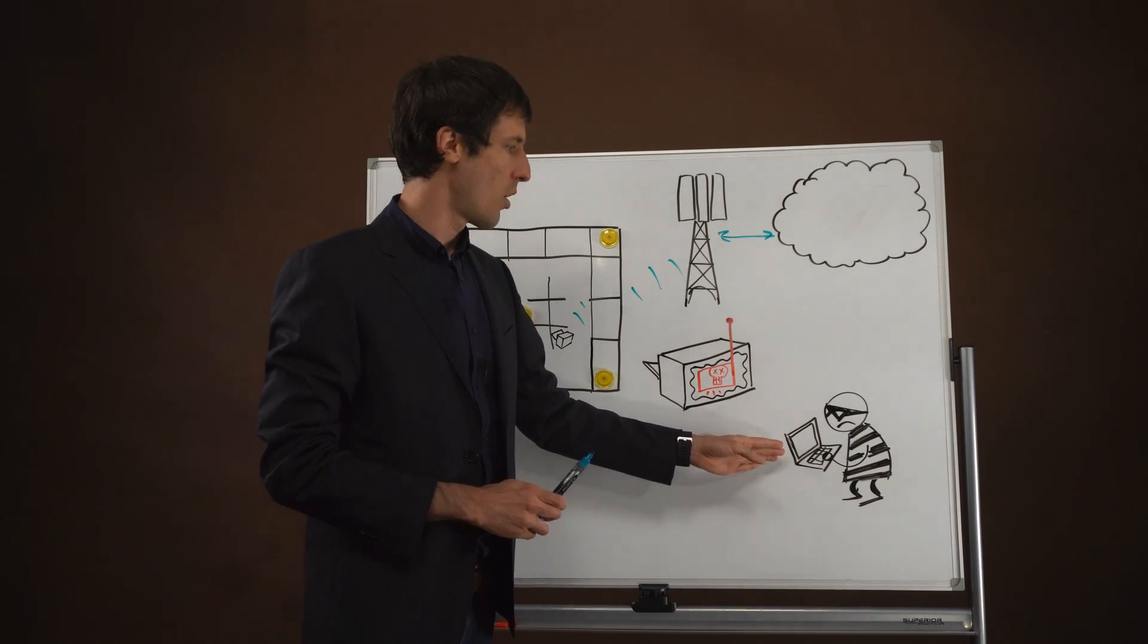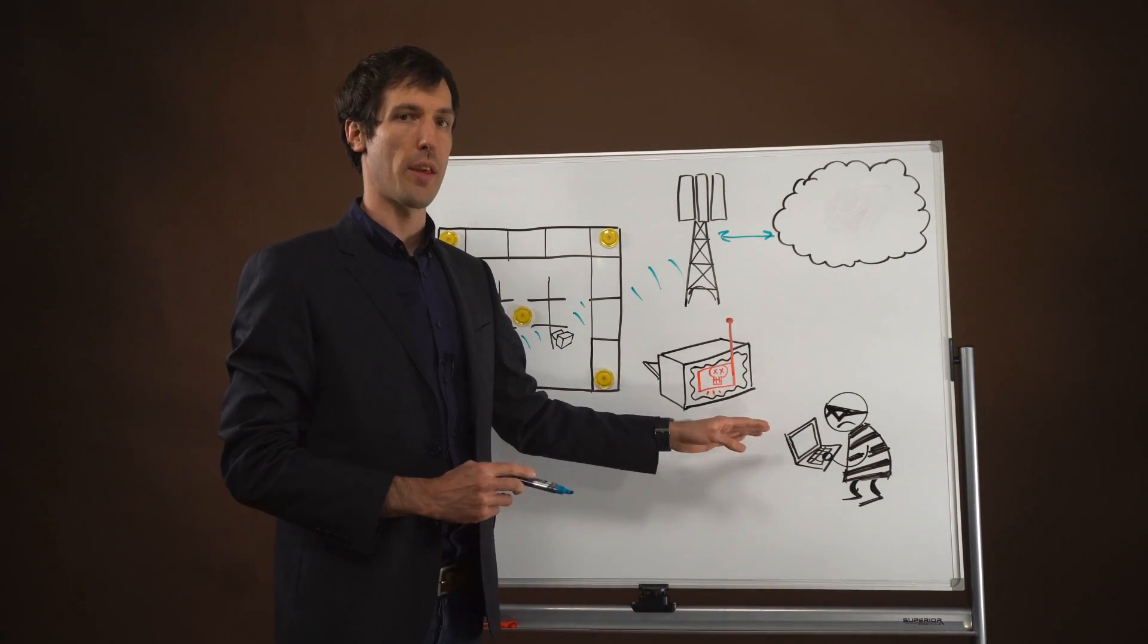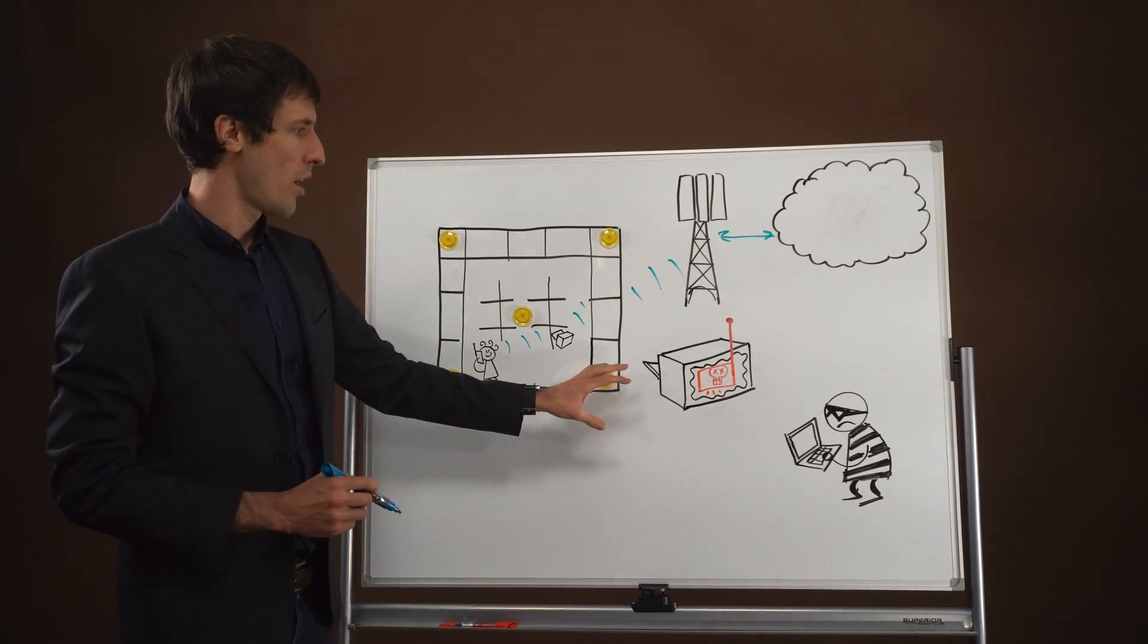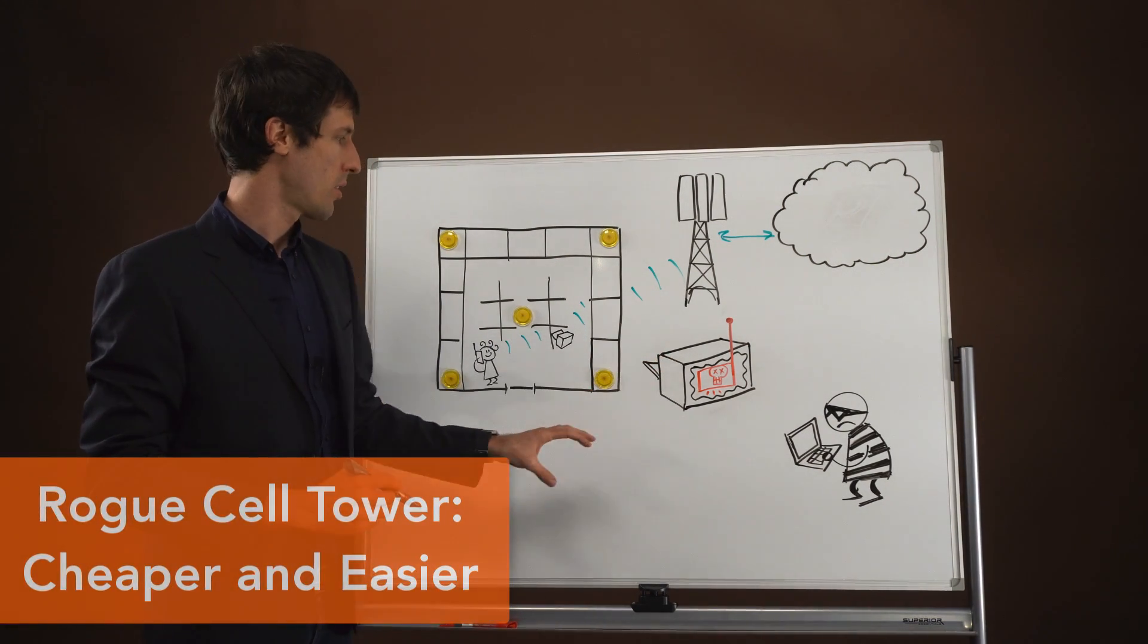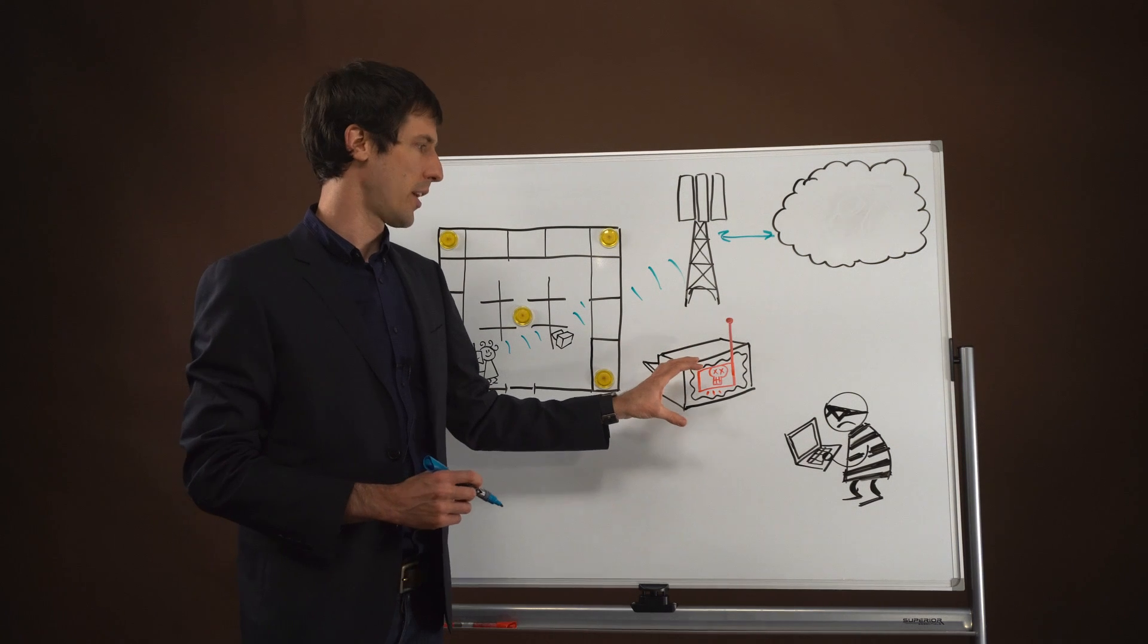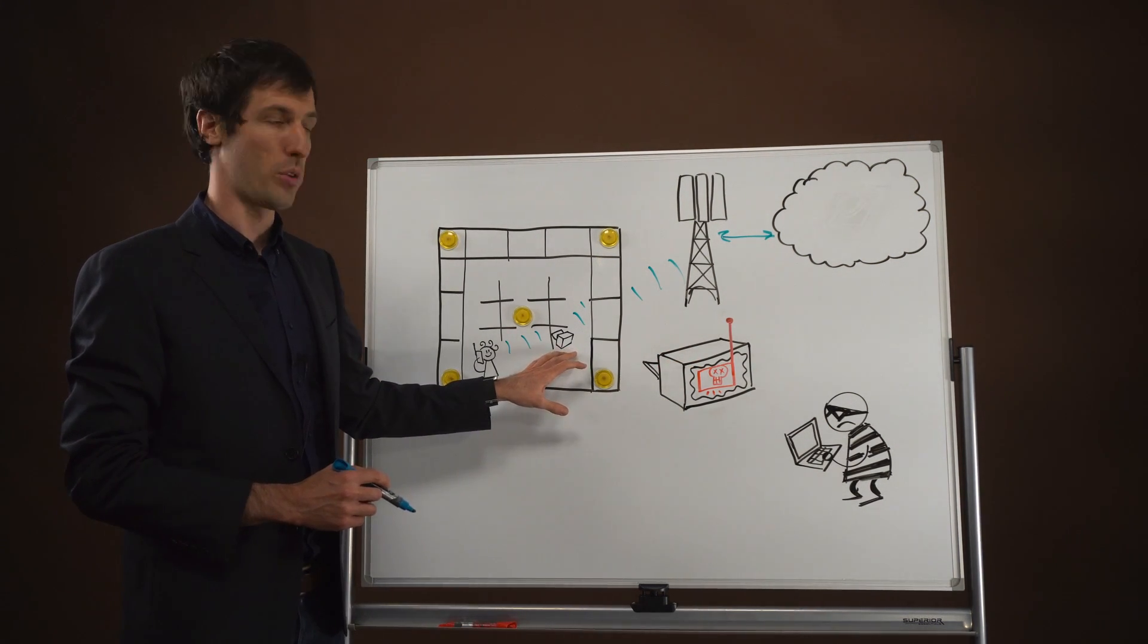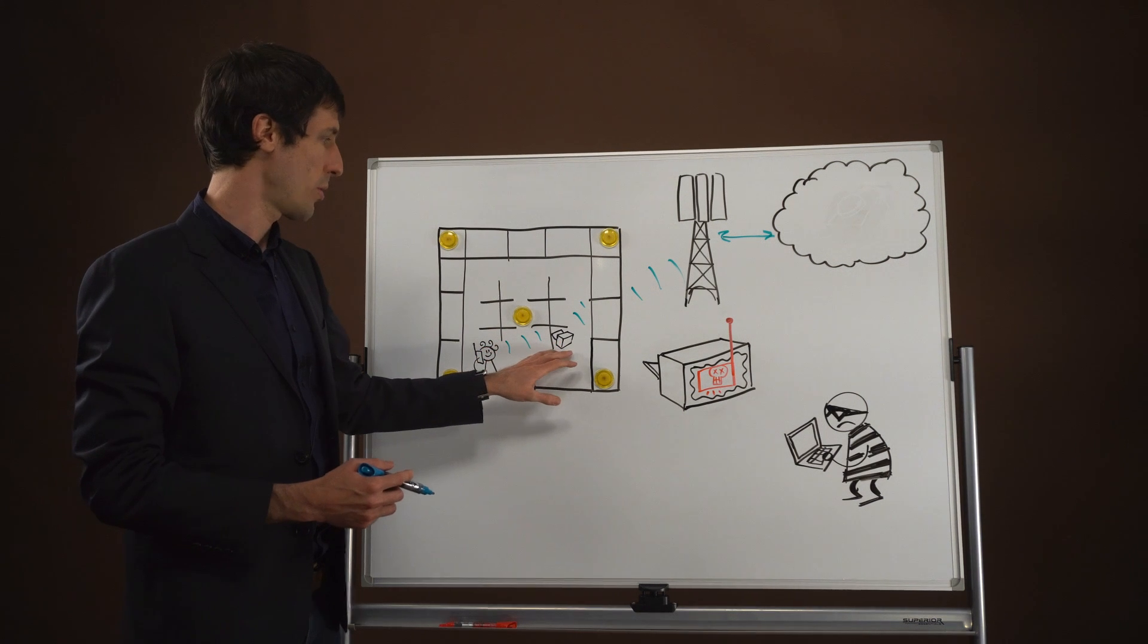If an attacker wanted to gain more intelligence about the employees within an organization, it's possible and very cheap nowadays to set up one's own rogue cell tower. In this case, we have what appears to be an innocuous legitimate piece of office equipment here, a printer.